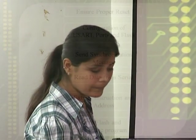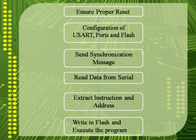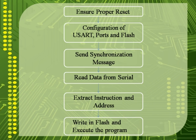The bootloader flowchart: first, ensure proper reset — whenever reset occurs a synchronization command is provided. Then configure user ports and flash modules. Send the synchronization message. Read data from the serial — the hex file is transmitted from the PC via serial cable and read from the serial port. After reading the hex file, the instruction and address are extracted and written into flash at the desired address, then the program is executed.